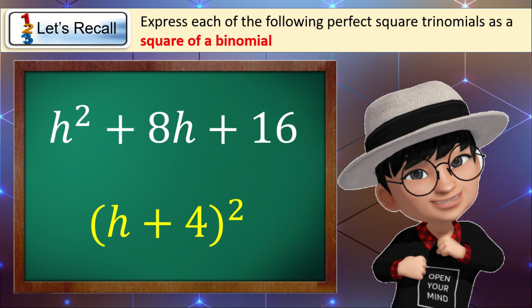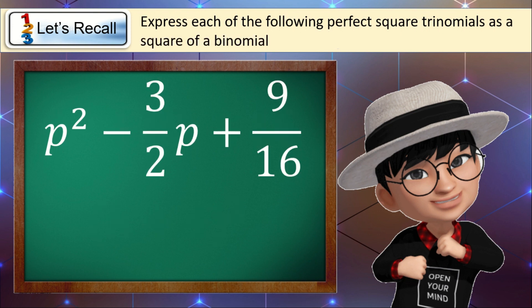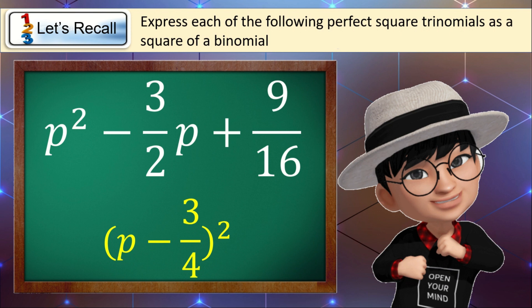For our last example, suppose we have p squared minus 3 over 2 times p plus 9 over 16, and we express this as a square of binomial. If your answer is the quantity of p minus 3 over 4, raised to the second power, that's great!